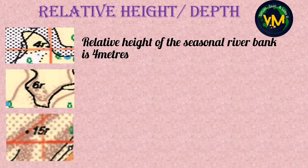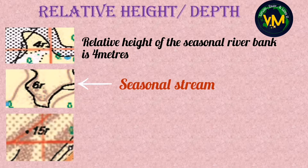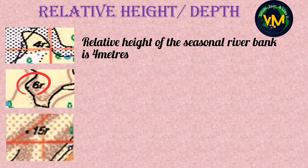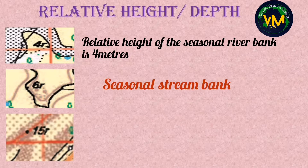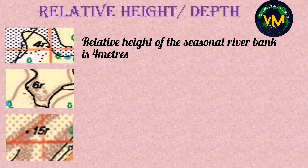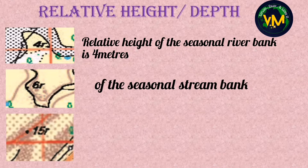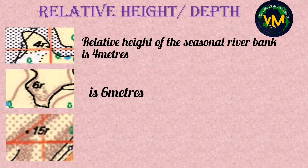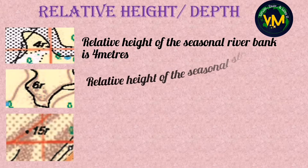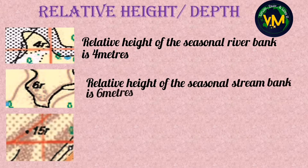Now look at the second picture. The 6R is written near a seasonal stream — the black color line is a seasonal stream. It is written on the side of the seasonal stream. On either side of the stream we have stream bank. As 6R is black in color, first write relative height, then the feature — seasonal stream bank — and the height is 6 meters. So the relative height of the seasonal stream bank is 6 meters.